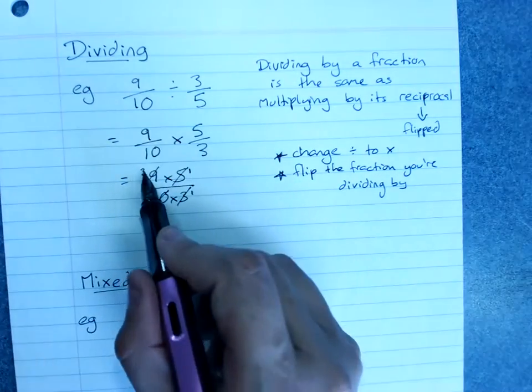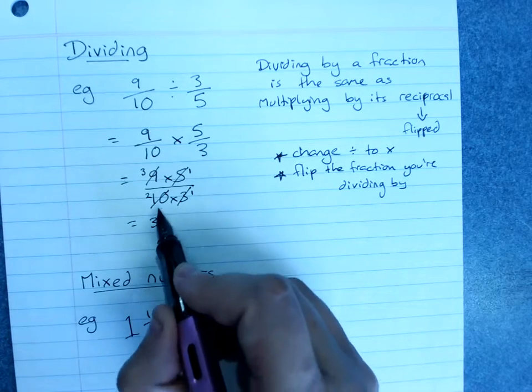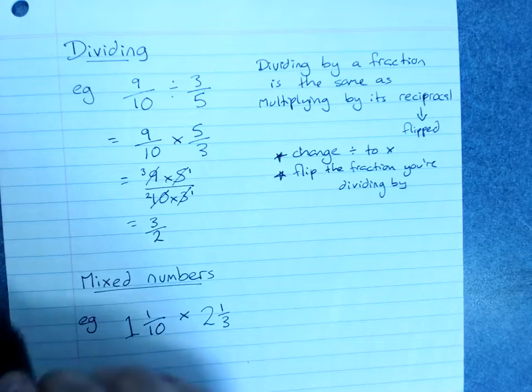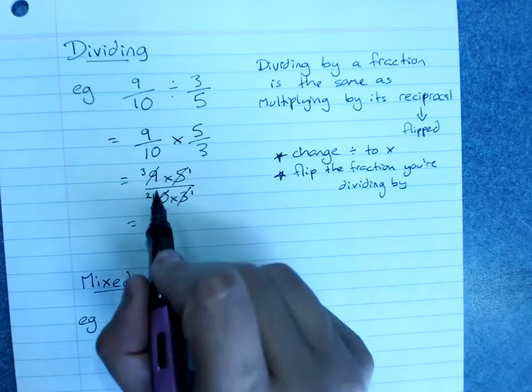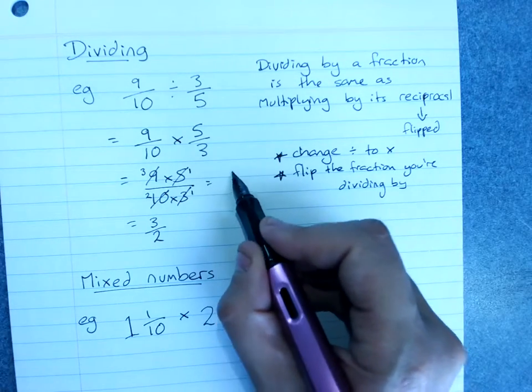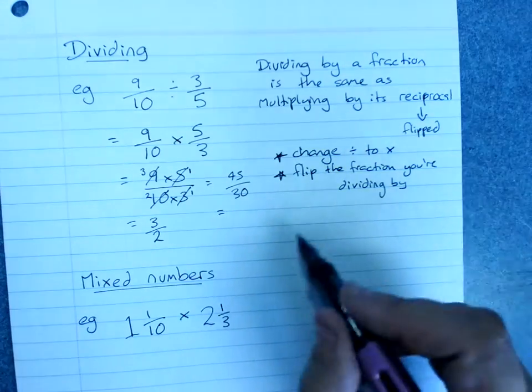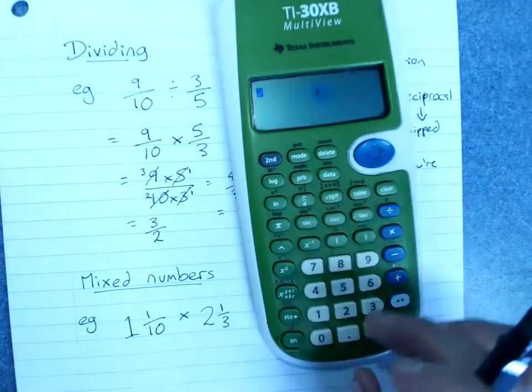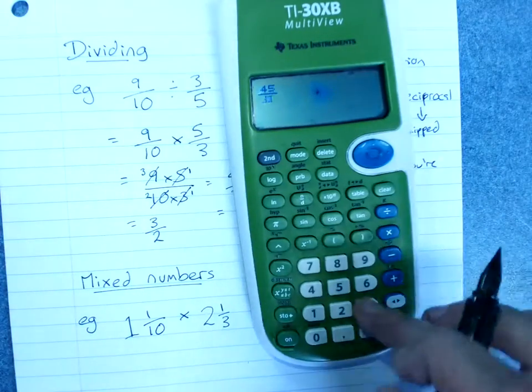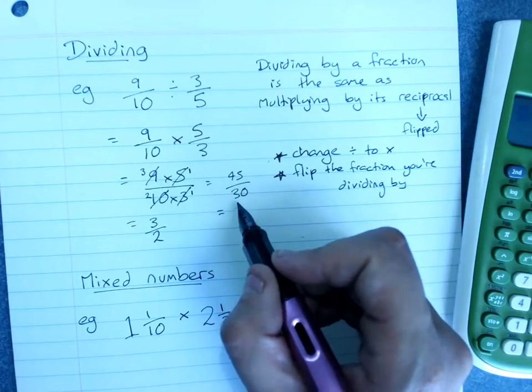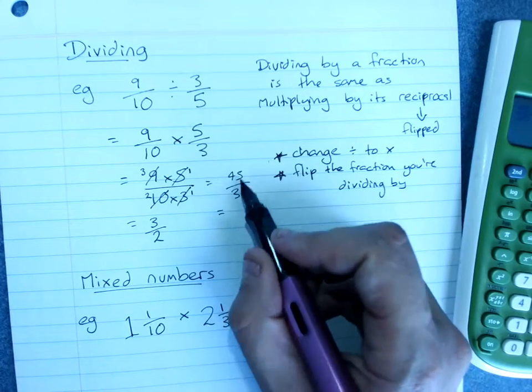And that's 3 times 1 is 3, over 2 times 1 is 2. Or, of course, we could do 9 times 5 is 45, 10 times 3 is 30, and simplify that fraction, either with our calculator, 45 over 30, 3 over 2. Or by realizing that we could divide them both by 15.